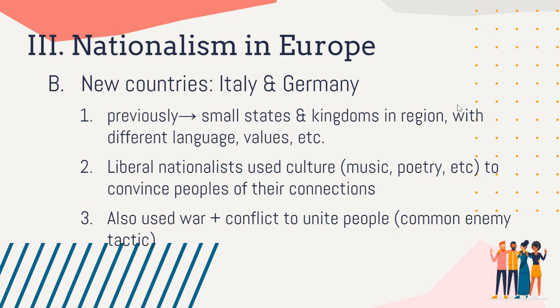There were people in both Germany and Italy who said we could be more powerful if we unify — looking at that balance of power in Europe, we could be even more powerful than France and England. Liberal nationalists used culture to convince people of their connections. Even though there were a lot of different values within what would become Italy and Germany, the nationalists wanted to inspire people to join together using music, poetry, plays, and newspapers — convincing people that even though Hanoverians dressed differently than Prussians, they were more alike than different.